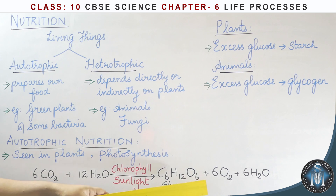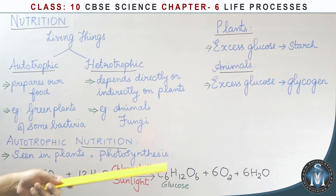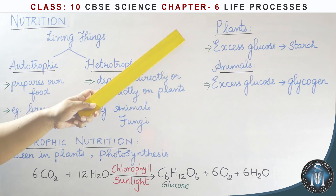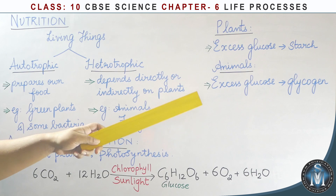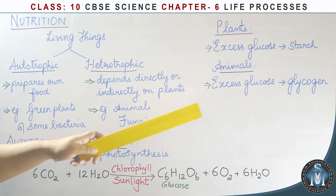The byproducts of photosynthesis are oxygen and water. This glucose is a source of energy for plants. When glucose is not enough, it is stored in the form of starch. Glucose can also be stored as glycogen.